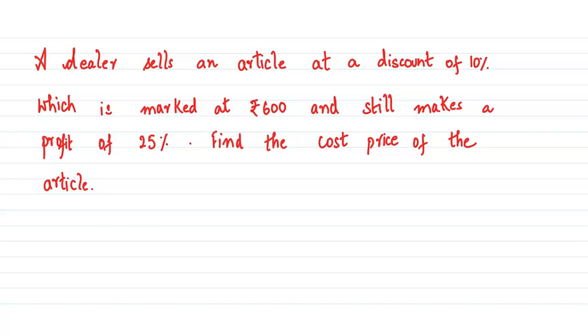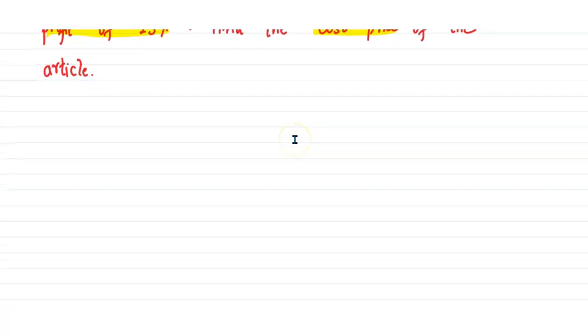Hello everyone, welcome to my channel. Today we are going to solve a marked price problem. A dealer sells an article at a discount of 10% which is marked at ₹600 and still makes a profit of 25%. Find the cost price of the article. So let's draw a picture representing the situation.